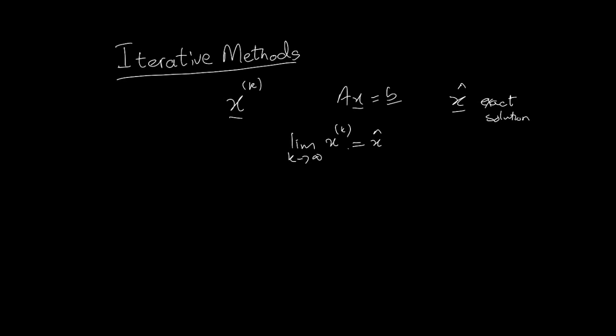So in a nutshell, that essentially is the idea of iterative methods. Basically, we have a box, you can imagine, and this box produces an x^(k) iterate, goes in, and out comes the x^(k+1) iterate.